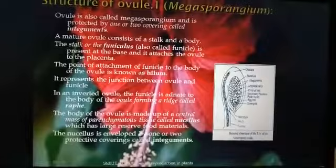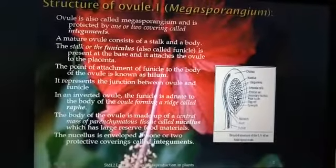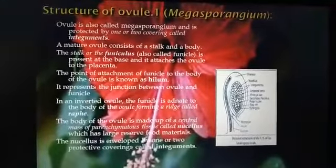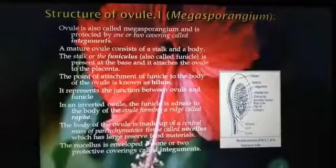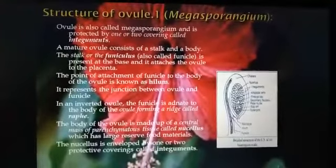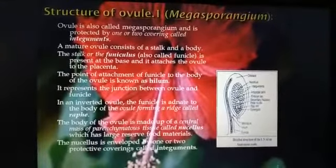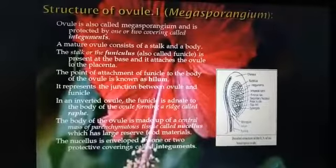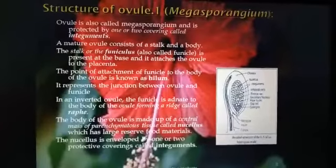The embryo sac contains 8 nuclei and is considered to be at the 7-celled stage. At the basal part of the embryo sac, 3 cells are located — the central one is the egg cell and the 2 lateral cells are synergids. At the center of the embryo sac, 2 nuclei are fused together and called the secondary nucleus, forming a single cell. At the upper end, 3 antipodal cells are located.